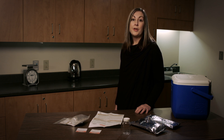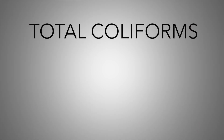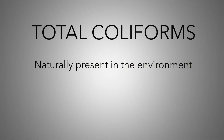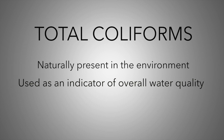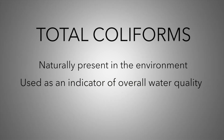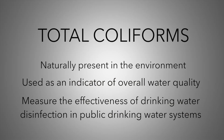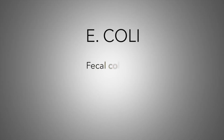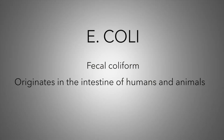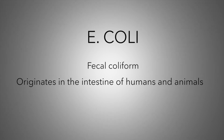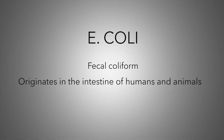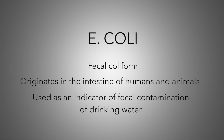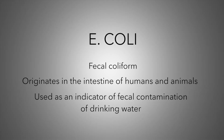When testing confirms the presence of these groups of bacteria, there's potential for disease-causing organisms to be present. Total coliforms are a group of bacteria that are naturally present in the environment. They are used as an indicator of overall water quality and the effectiveness of drinking water disinfection in public drinking water systems. E. coli is a fecal coliform that originates only in the intestine of humans and animals and are regularly excreted in feces in abundant numbers. Therefore, E. coli is used as an indicator of fecal contamination of drinking water.